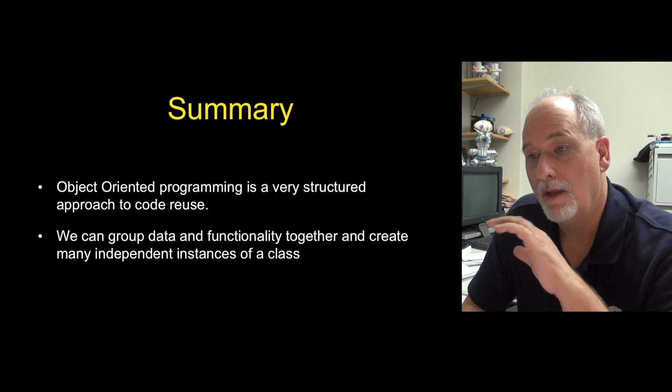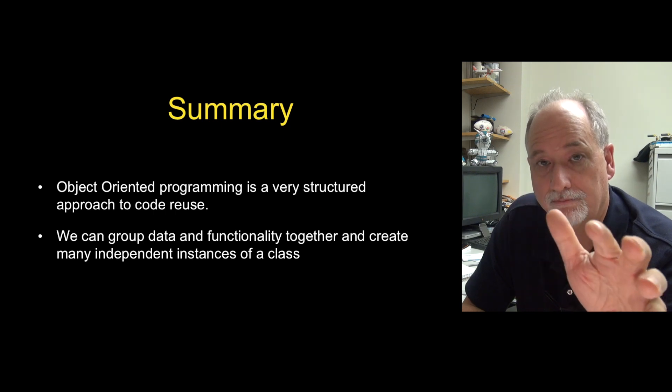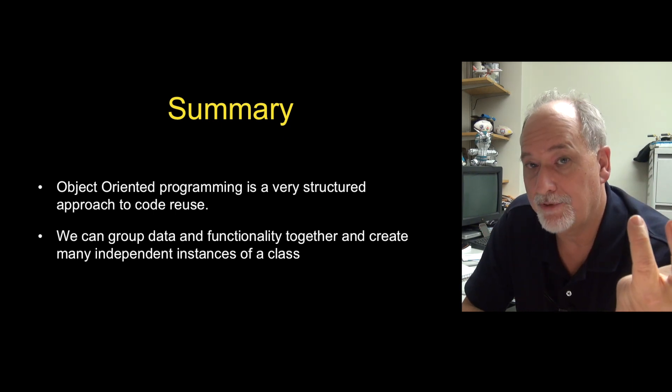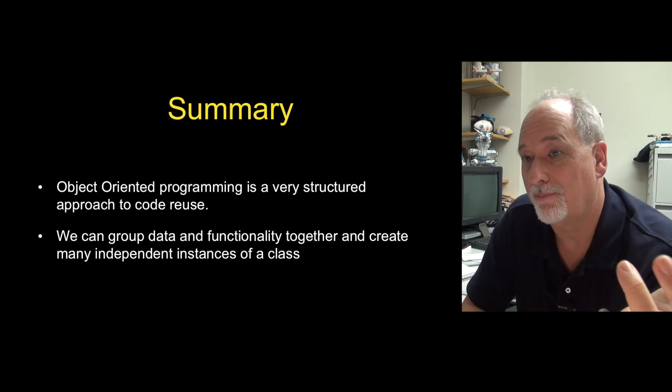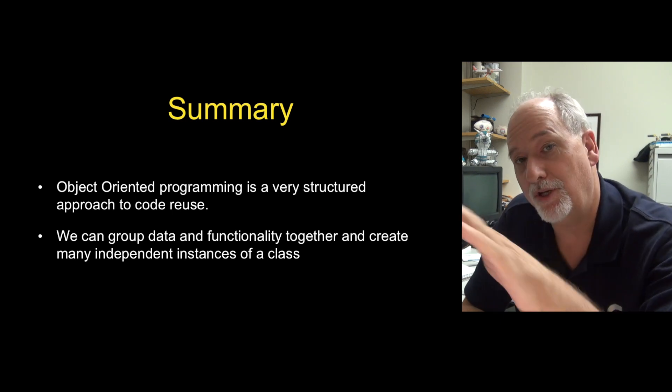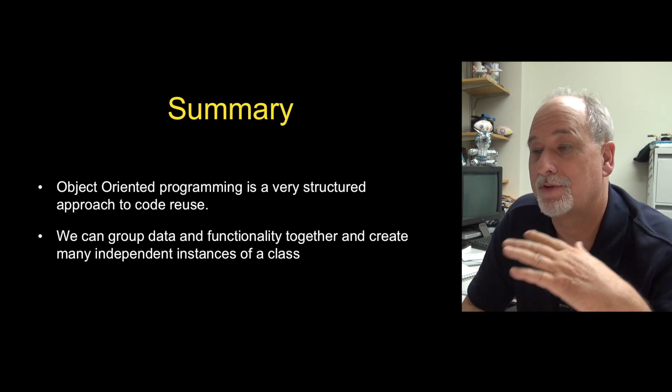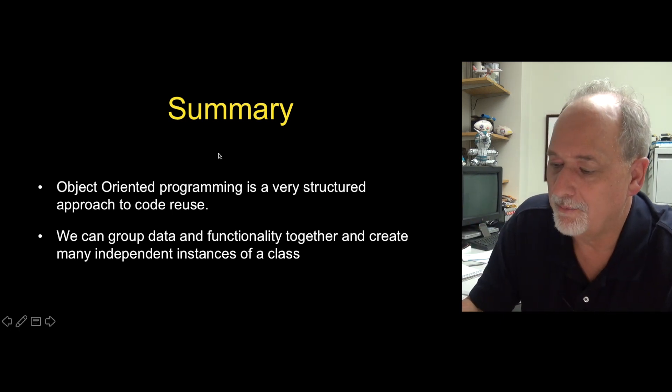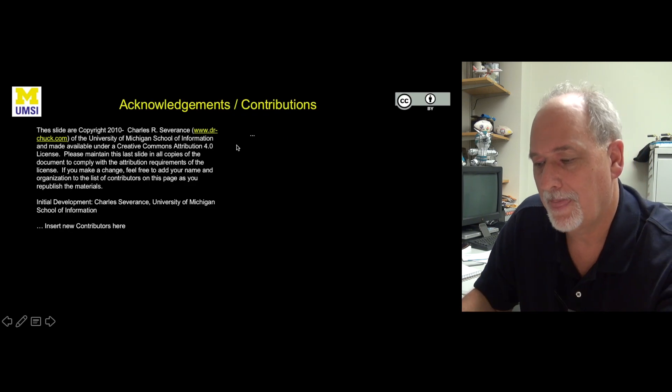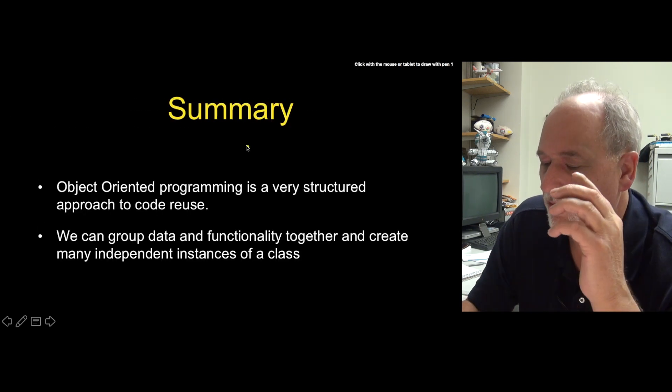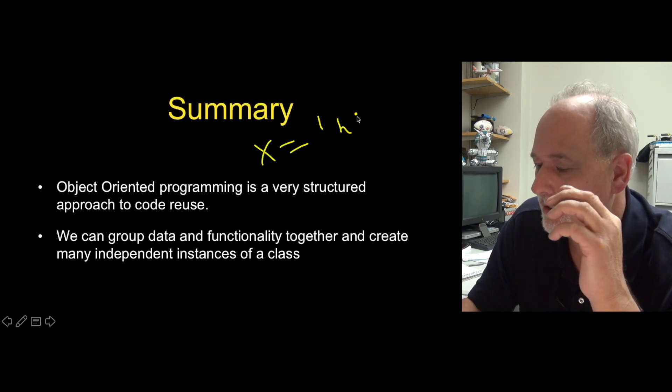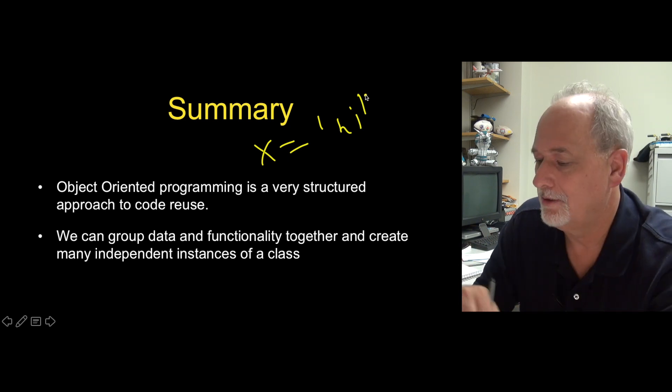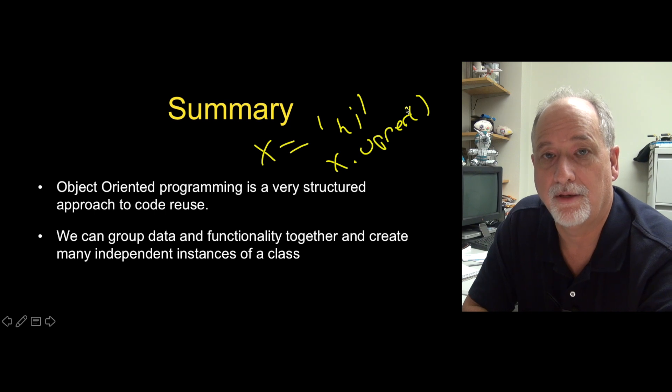So object-oriented is awesome. For the rest of this class, we're not going to write any object code. We're not going to use class at all. But we are going to use objects. And literally, you've been using objects from the beginning of this course. As soon as you said print, as soon as you said, you know, x equals high, that's an object. And as soon as you said x.upper, you were calling a method, right? You've been calling a method all along.